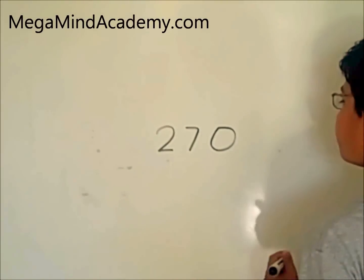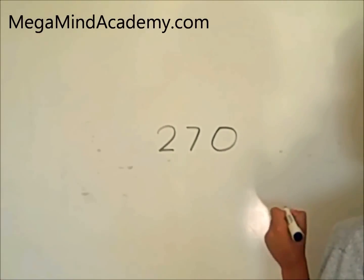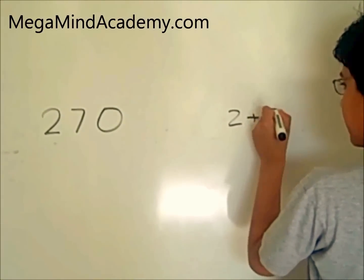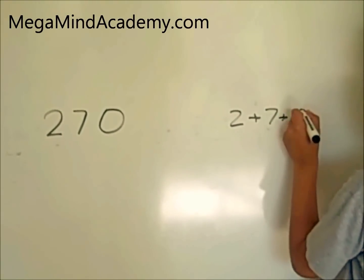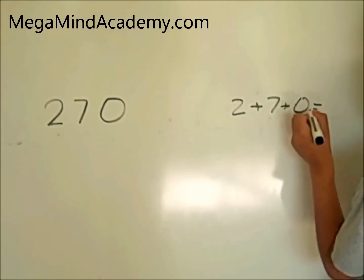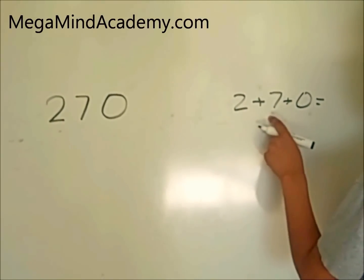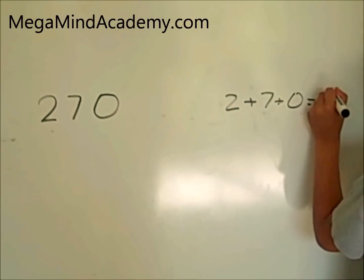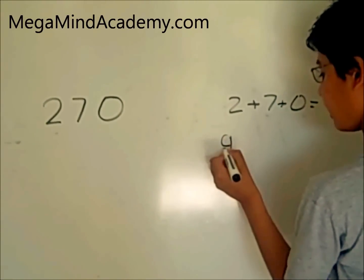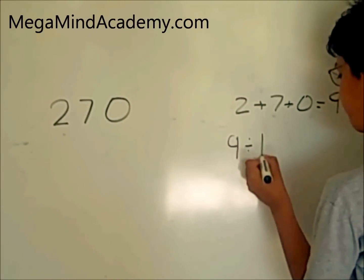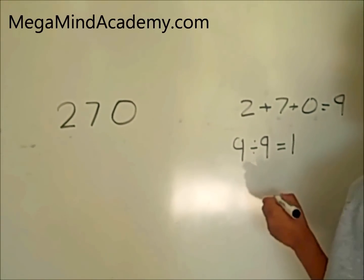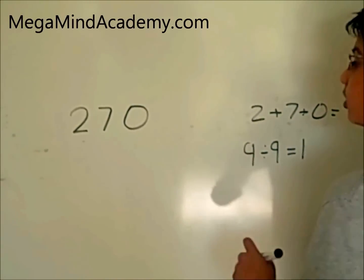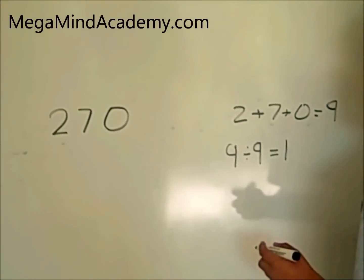270 is our number. Now we need to add up all the digits as the rule says. 2 plus 7 plus 0 equals 9. Since 9 divided by 9 equals 1, 9 is equally divisible by 9. So that means 270 is equally divisible by 9.